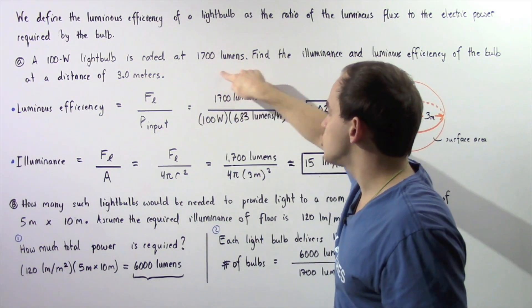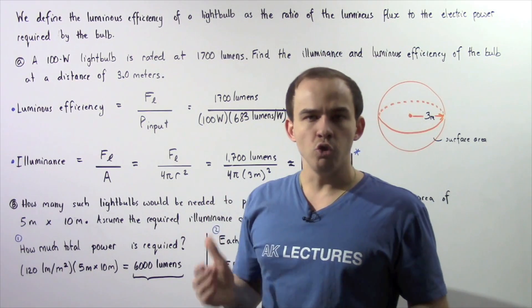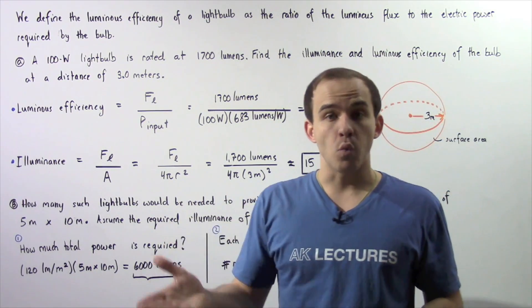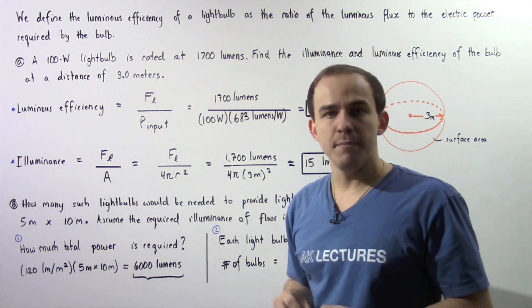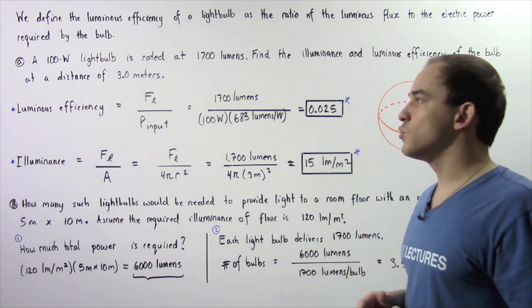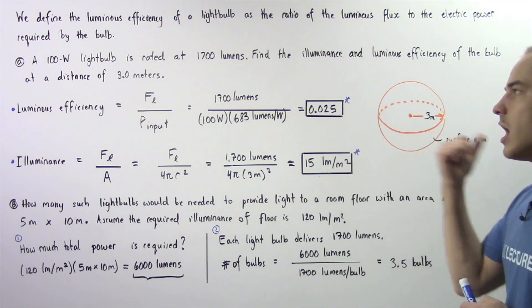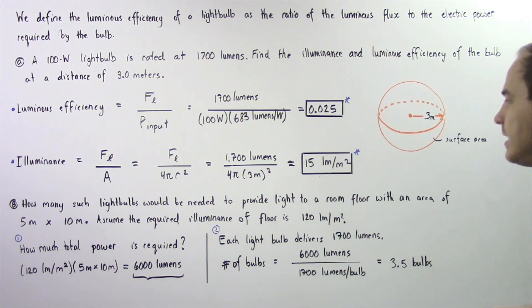So the flux divided by the surface area of the sphere. Our flux is 1700 lumens. The surface area is 4π multiplied by the square of the radius where the radius is 3 meters. We plug that into our calculator and we see that our illuminance is 15 lumens per meter squared. Now let's move on to part B.